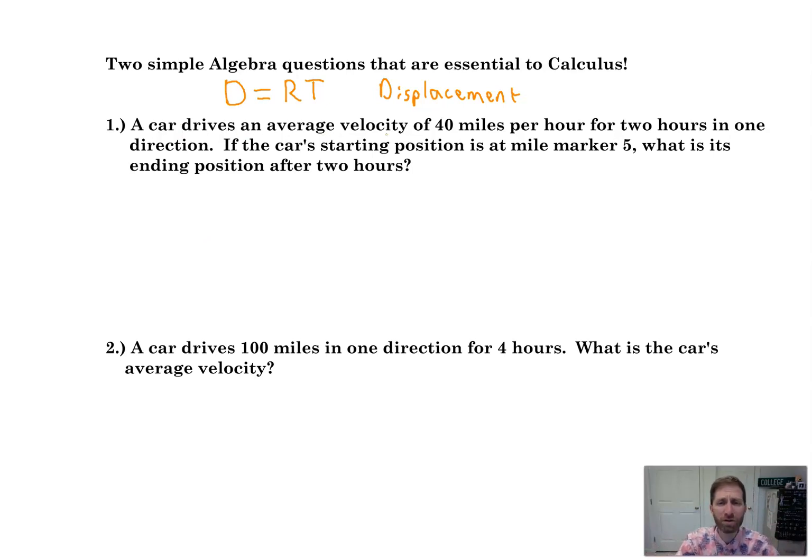It says a car drives an average velocity of 40 miles per hour for two hours in one direction. Okay, well, before I even read the rest of the problem, I can use those numbers. Let's just calculate what we've got. We've got the displacement. Assuming the car is traveling in one direction, the displacement and the distance are the same.